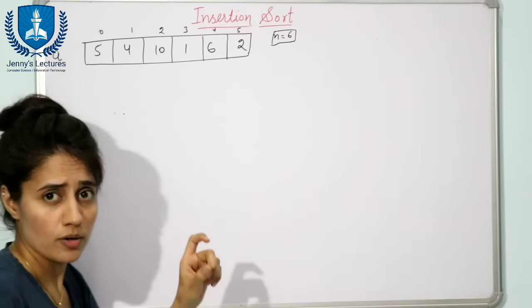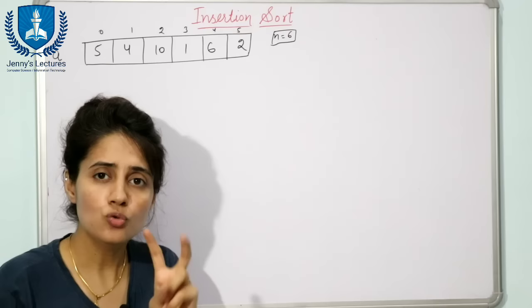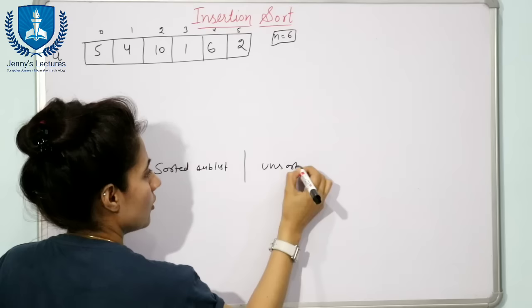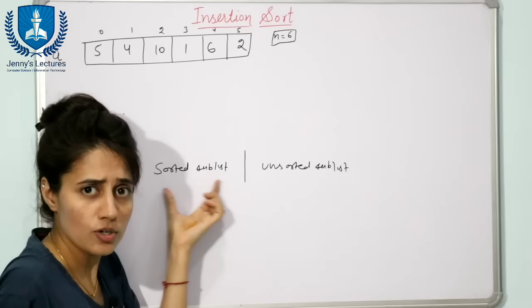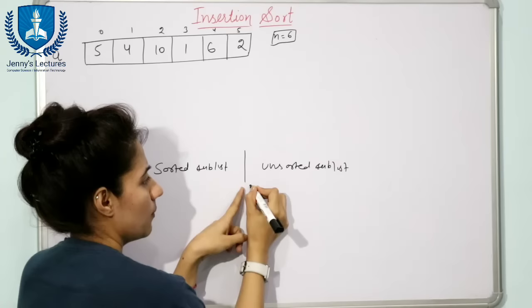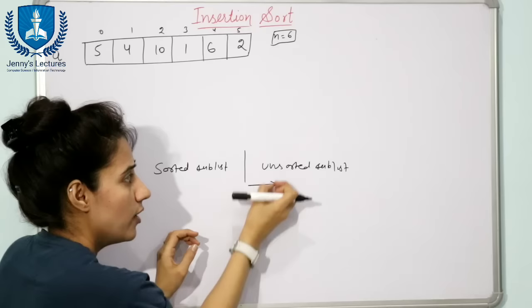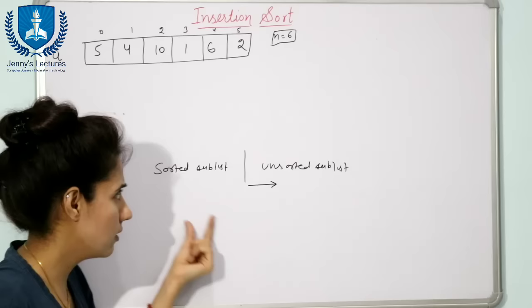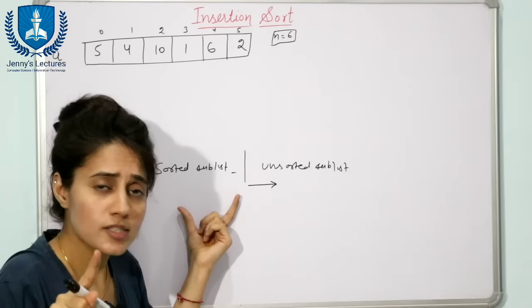How does the insertion sorting technique work? In this technique, the given array is divided into two parts: one is the sorted sublist and another is the unsorted sublist. We trace the unsorted sublist from its start and take one variable from it to insert that value into the sorted sublist.